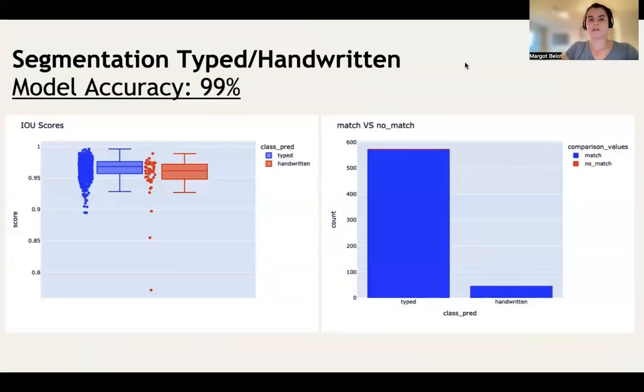Our segmentation model has an accuracy of 99%. Here you have two plots. On this side, you have a box plot showing the intersection over union scores, which means how well the model can find a label in a picture and crop it out. The score goes between zero and one, one being perfect. As you can see, the model is capable of finding typed labels better than handwritten labels. On this side, you have a bar chart showing how well the model can classify those cropped labels. It made no mistakes with typed labels but misclassified just two handwritten labels as typed.